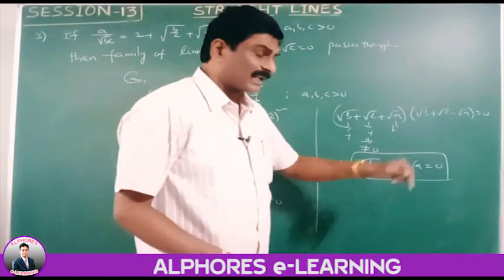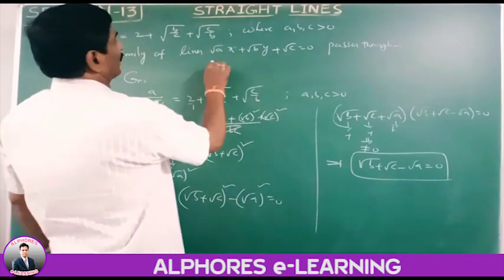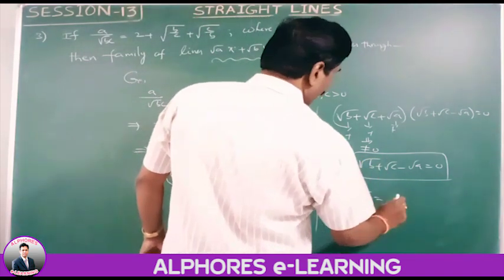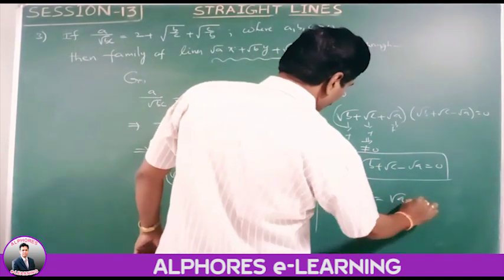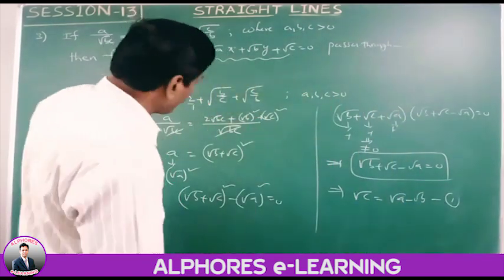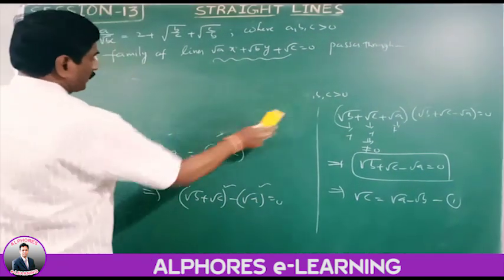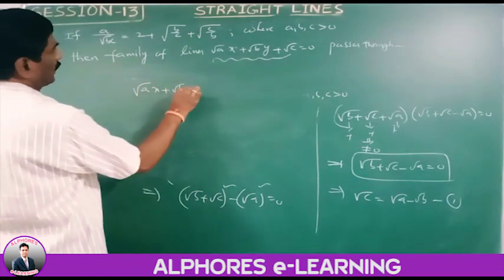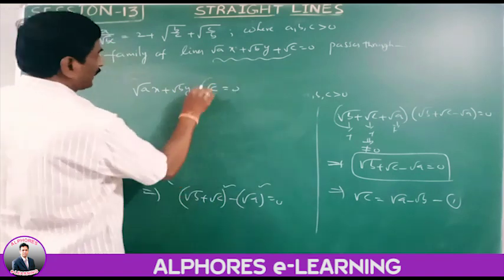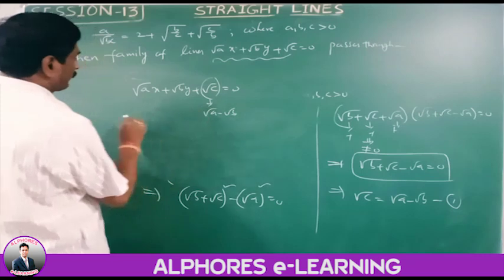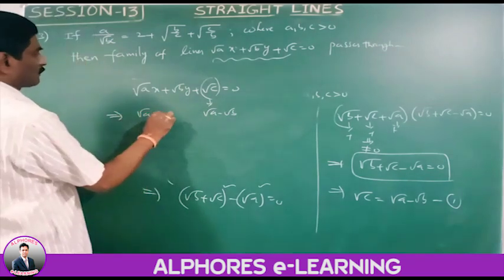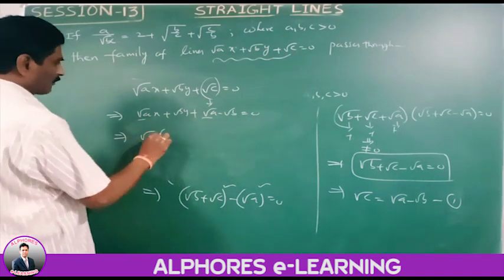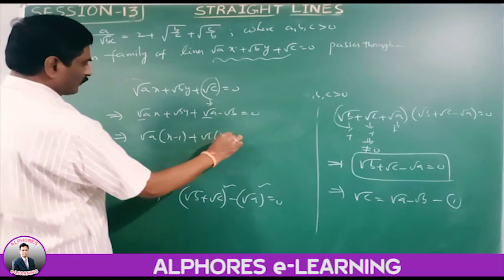From root(b) plus root(c) minus root(a) equals 0, we get root(c) equals root(a) minus root(b). Substituting into root(a)·x plus root(b)·y plus root(c) equals 0: root(a)·x plus root(b)·y plus (root(a) minus root(b)) equals 0. Taking root(a) and root(b) as common terms: root(a)(x plus 1) plus root(b)(y minus 1) equals 0.